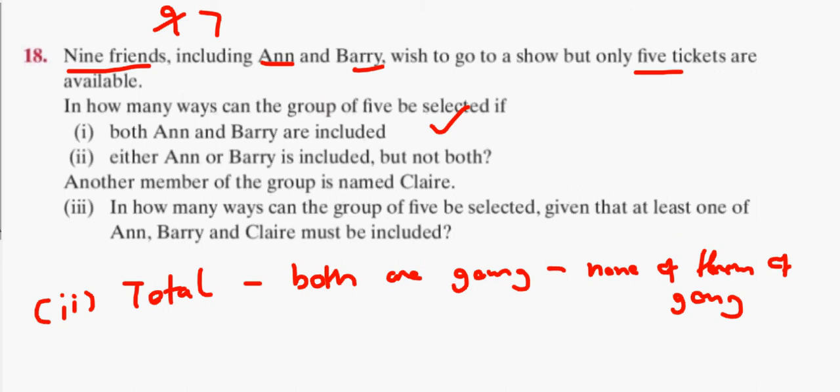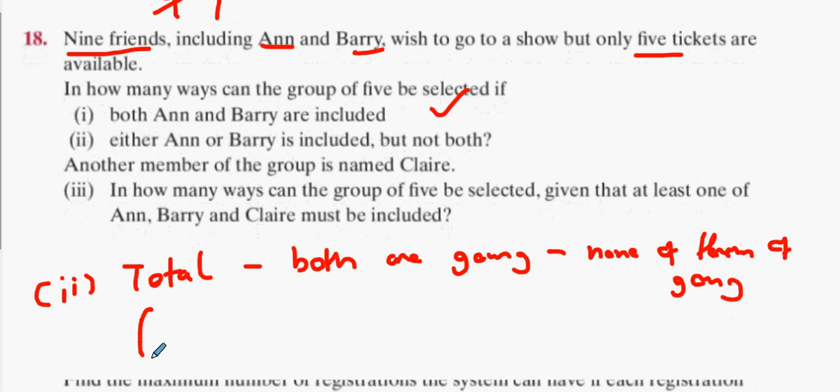Okay. So, let's do this. What's your total? Nine people choose five tickets. Both are going. I think we already did that, didn't we? What did we do earlier? Seven choose three.